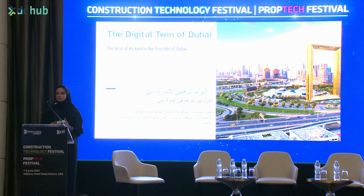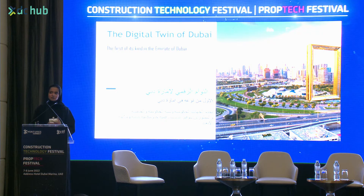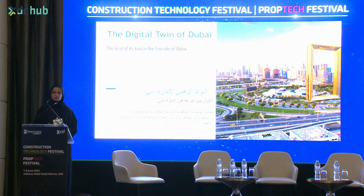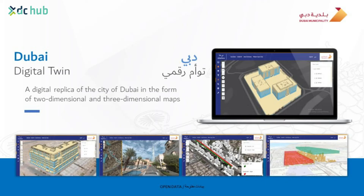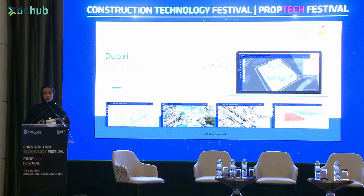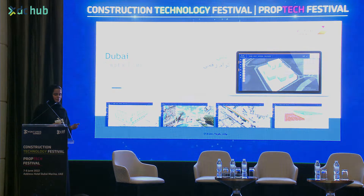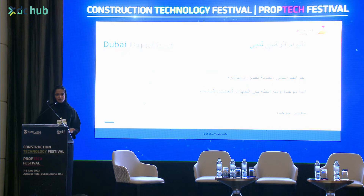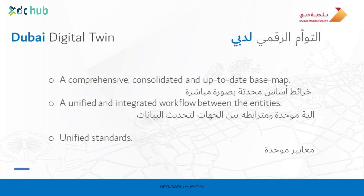We are actually using different methodologies, different sources of data, and different types of data in order to feed our Digital Twin platform and make it sustainable. The Digital Twin contains a lot of information, a lot of 2D and 3D data. We went from underground to above ground to the sky of Dubai. It is a mix of 2D and 3D data — it contains base maps, standards, and a standardized workflow between different entities.